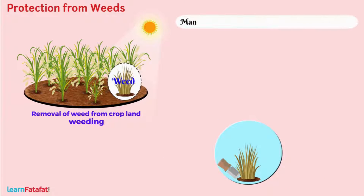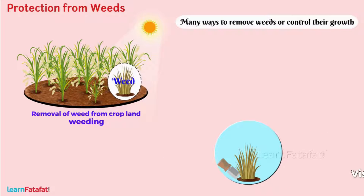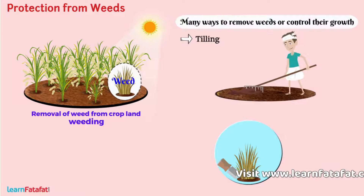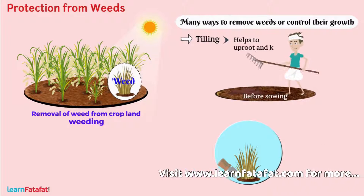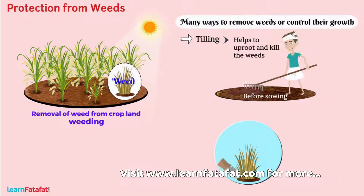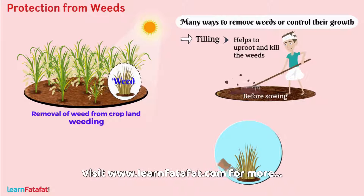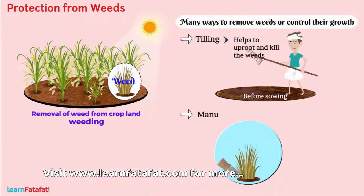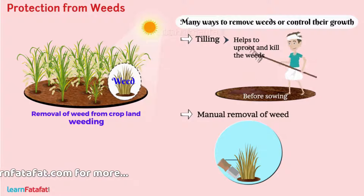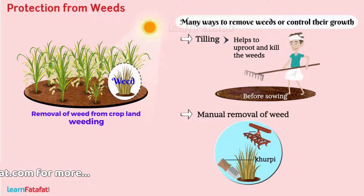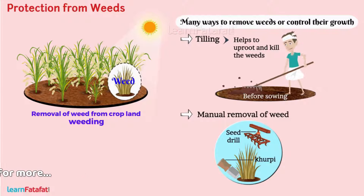There are many ways to remove weeds or control their growth. Tilling before sowing helps to uproot and kill the weeds. Manual removal of weeds is done by trowel or seed drill.